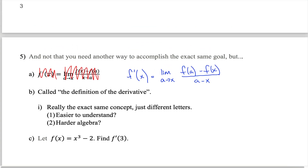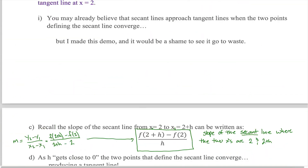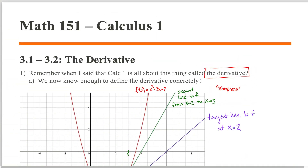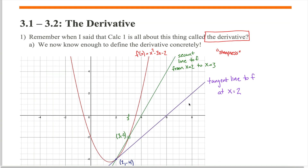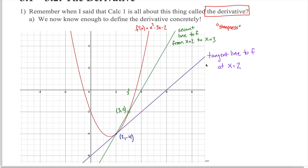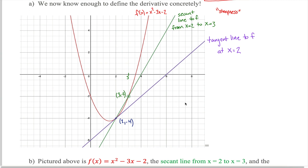So far in this section, we've made some huge leaps. We've defined the concept of the derivative concretely by combining what we learned in the first section — where we took an overview of calculus and figured out that we want to know the slope of the tangent line to a function at a given point — with what we learned about limits in the previous section.